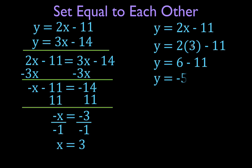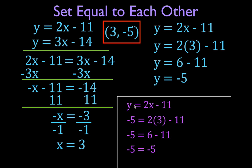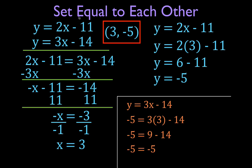y equals 6 minus 11, so y equals minus 5. The solution is x equals 3, y equals minus 5 — the point where these two lines intersect. Let's check: substitute both values into the first equation y equals 2x minus 11 and we get minus 5 equals minus 5. Then substitute into the second equation and again get minus 5 equals minus 5. Both checks hold true, confirming this point is the solution to both equations.